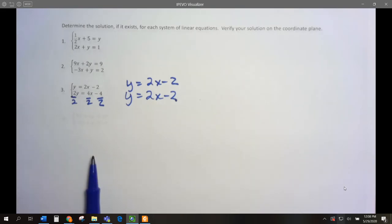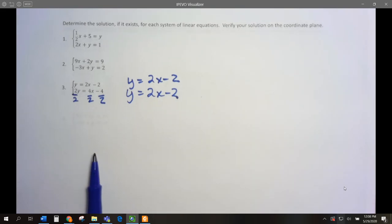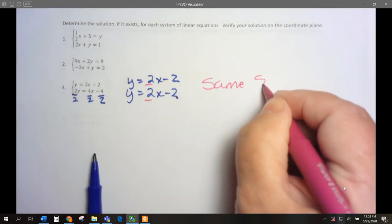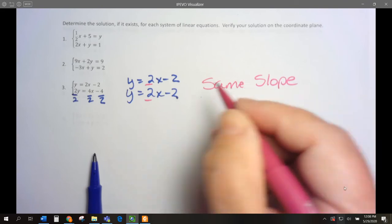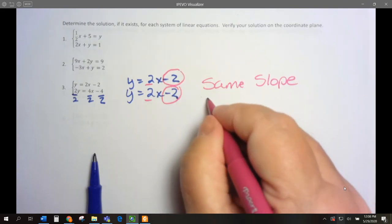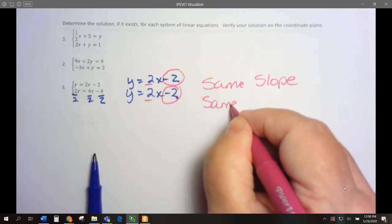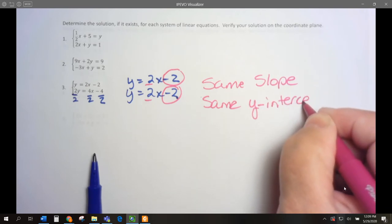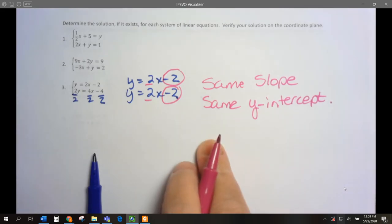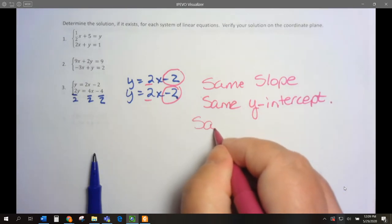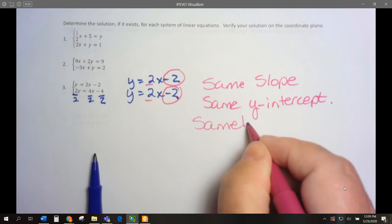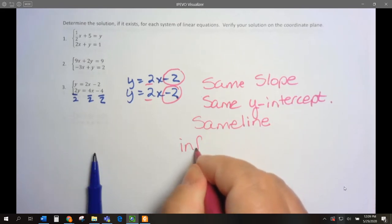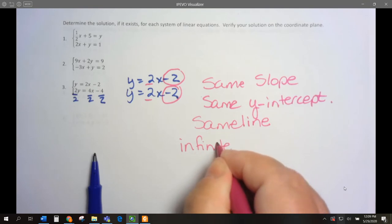These have the same slope and the same y-intercept. That tells us that these are the exact same line. If these are the same line, then every point on one would be the answer on the other. So there's infinite solutions.